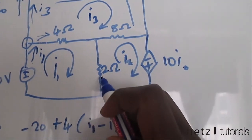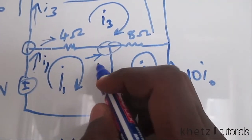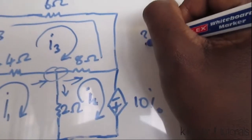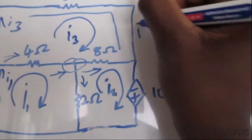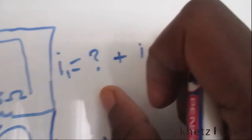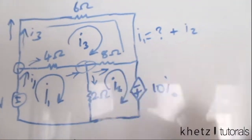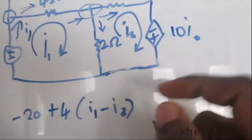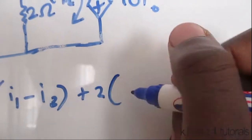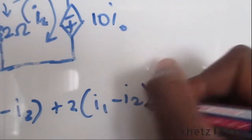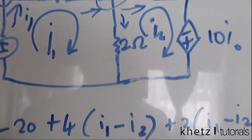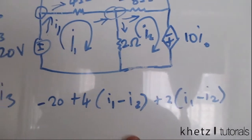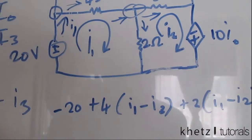Moving on: at this node, I.1 goes in and it splits into I.2 going in that direction and an unknown current. So I.1 equals an unknown current plus I.2. The unknown current which goes through the 2-ohm resistor shared between the first and second mesh is essentially equal to I.1 subtract I.2. So we're going to have 2 times (I.1 subtract I.2) for the shared resistor. That is basically how you form your mesh equations - you always have to check how the current splits. Make sure you have terms matching the number of branches in your mesh.